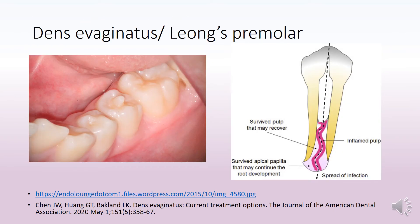Dense evaginatus, first described by Leong, is specifically seen in premolars and is very common among the Asian population. In this diagrammatic representation, you can see that the pulp actually protrudes along with the dentine and enamel, forming a conical elevation, which has a very high chance of getting infected and inflamed.